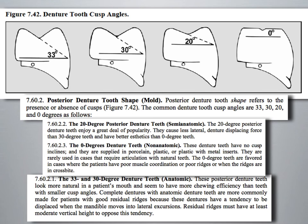The 33- or 30-degree denture teeth are considered fully anatomic teeth. These posterior denture teeth look more natural and seem to have more chewing efficiency than teeth with smaller cusp angles. Complete dentures with anatomic teeth are more commonly made for patients with good residual ridges, because these dentures have a tendency to be displaced during lateral excursions. Residual ridges must have at least moderate vertical height to oppose this tendency.